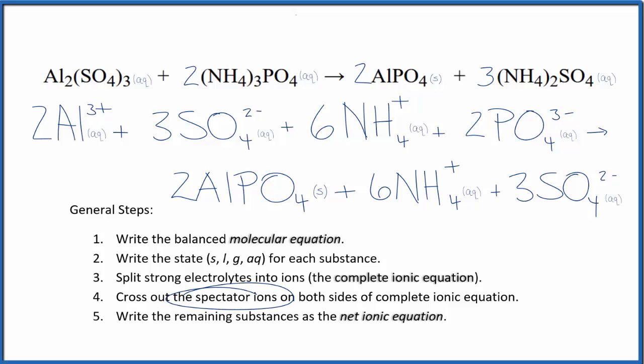Now we can cross out spectator ions. They're on both sides of the complete ionic equation. So I see I have three sulfate ions here in the reactants, and then in the products down here, I have three sulfate ions. These are spectator ions. We can remove those.